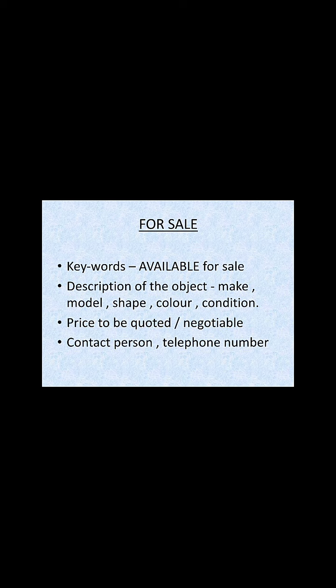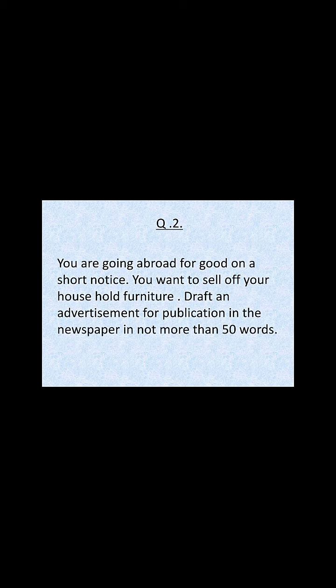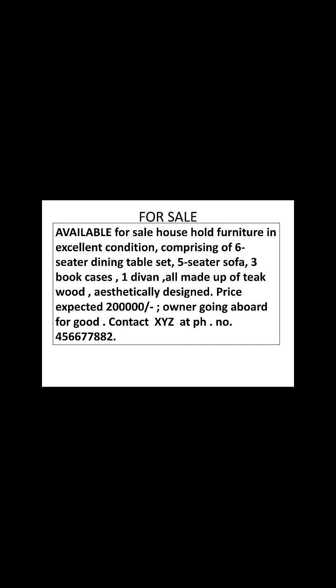Next is 'For Sale'. Keywords are: available for sale. Then description of the object — make, model, shape, color, condition — price to be quoted, whether negotiable, and contact person with telephone number. Example: you are going abroad for good on short notice and want to sell off your household furniture. Draft an advertisement for publication in the newspaper in not more than 50 words. Answer — Available for sale: household furniture in excellent condition comprising a six-to-seven-seater dining table set, five-seater sofa, three bookcases, one diwan, all made of teakwood, aesthetically designed. Price expected: two hundred thousand. Owner going abroad for good. Contact XYZ at phone number 456677882.